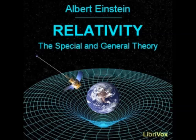Section 23: Behavior of Clocks and Measuring Rods on a Rotating Body of Reference. Hitherto I have purposefully refrained from speaking about the physical interpretation of space and time data in the case of this general theory of relativity. As a consequence, I am guilty of a certain slovenliness of treatment, which, as we know from the special theory of relativity, is far from being unimportant and pardonable. It is now high time that we remedy this defect, but I would mention at the outset that this matter lays no small claims on the patience and on the power of abstraction of the reader.